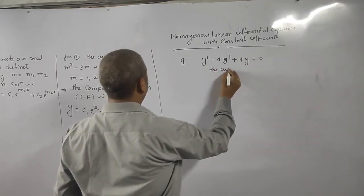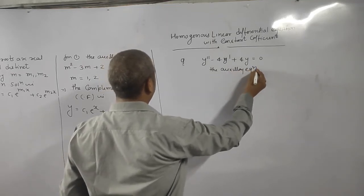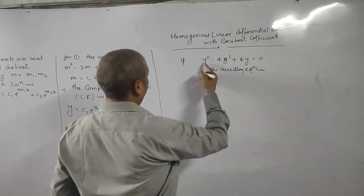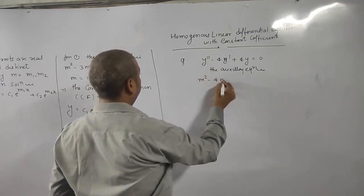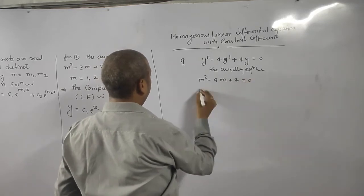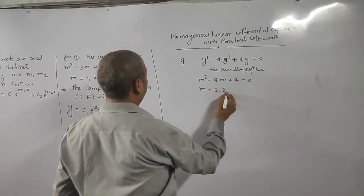So the auxiliary equation is, how we write the auxiliary equation? Same. Y double dash means m² minus 4m plus 4 is equal to 0. What is m value? 2, 2.